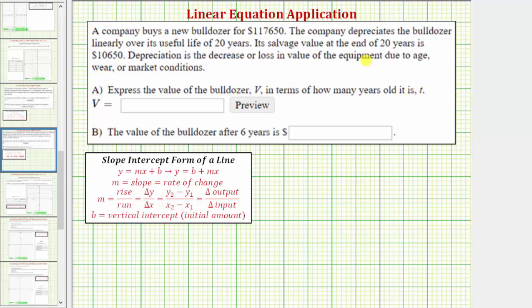And because the company is depreciating the bulldozer linearly, our equation is going to be a linear equation. To help us write the equation, we'll write the given information as ordered pairs and then use the ordered pairs to find the equation.